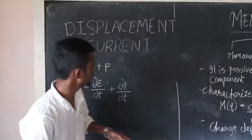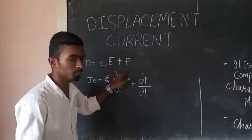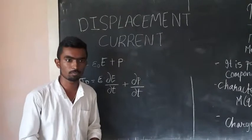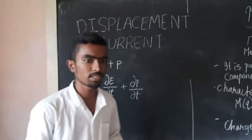The electric displacement field is defined as D equals epsilon zero E plus P, where epsilon zero is the permittivity of free space and E is the electric field intensity. P is polarization of the medium.